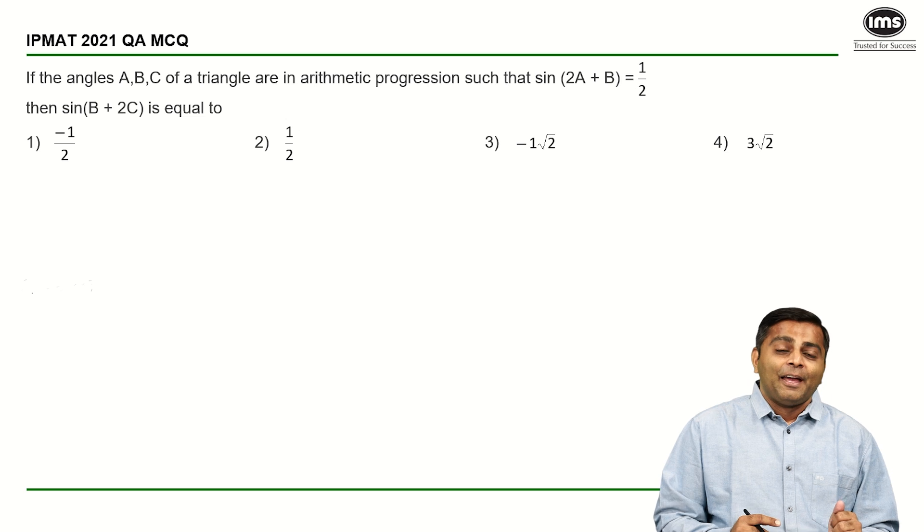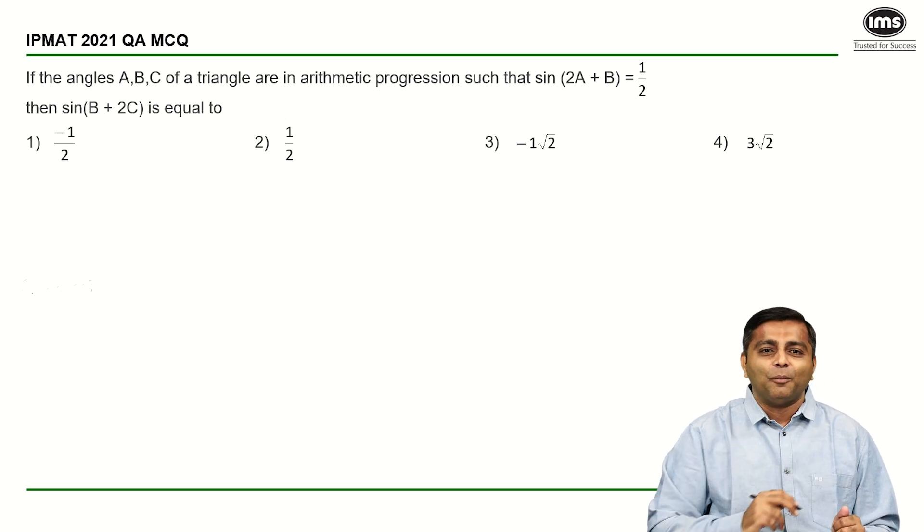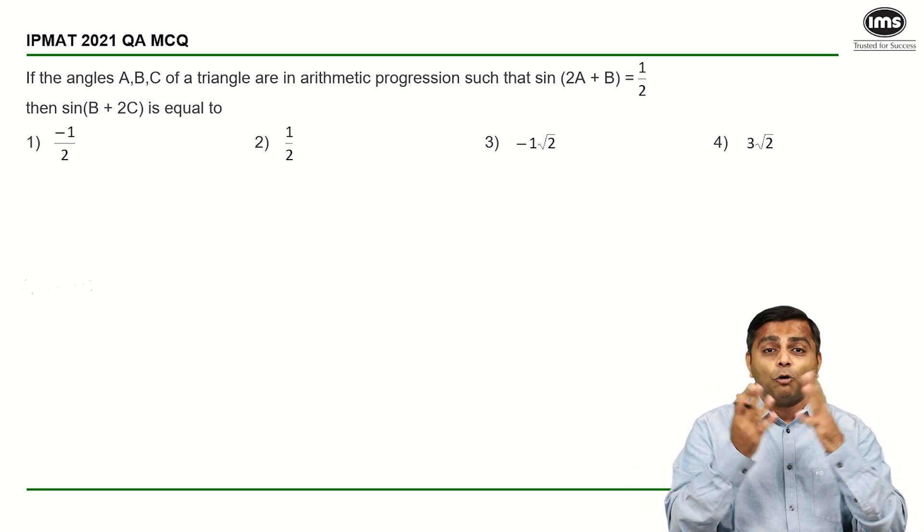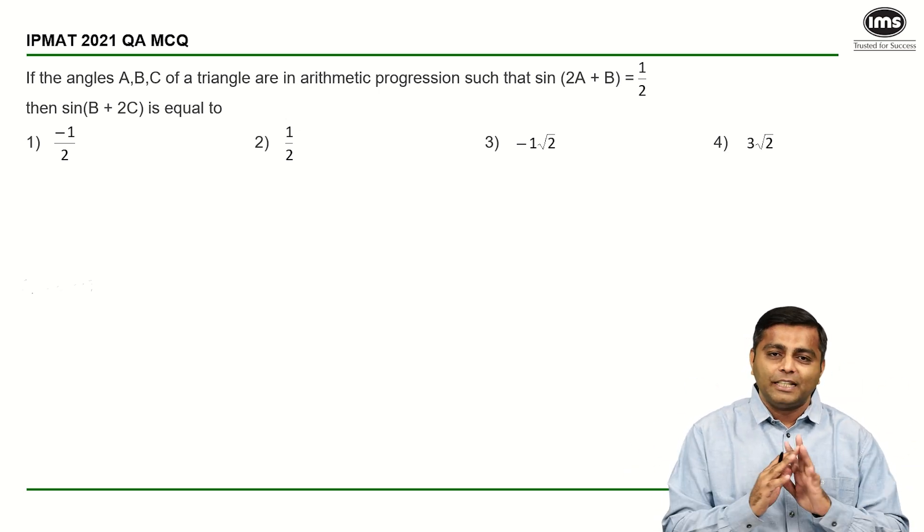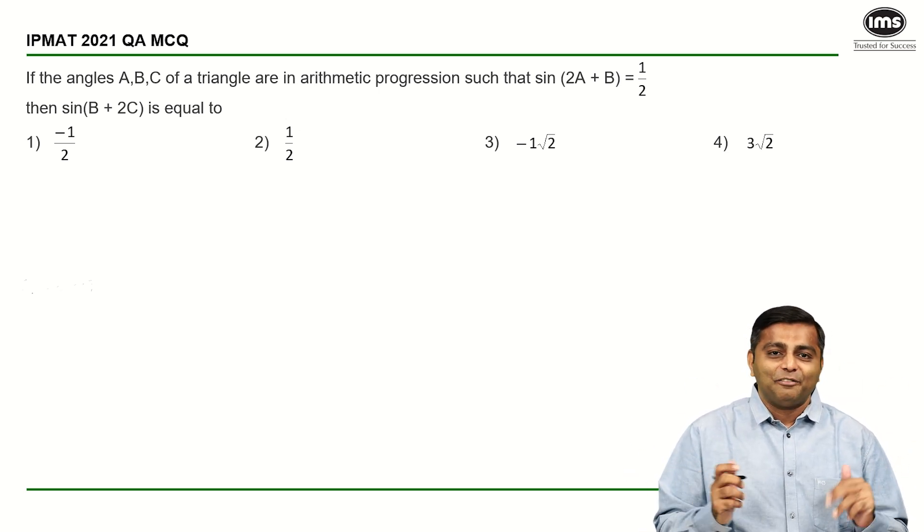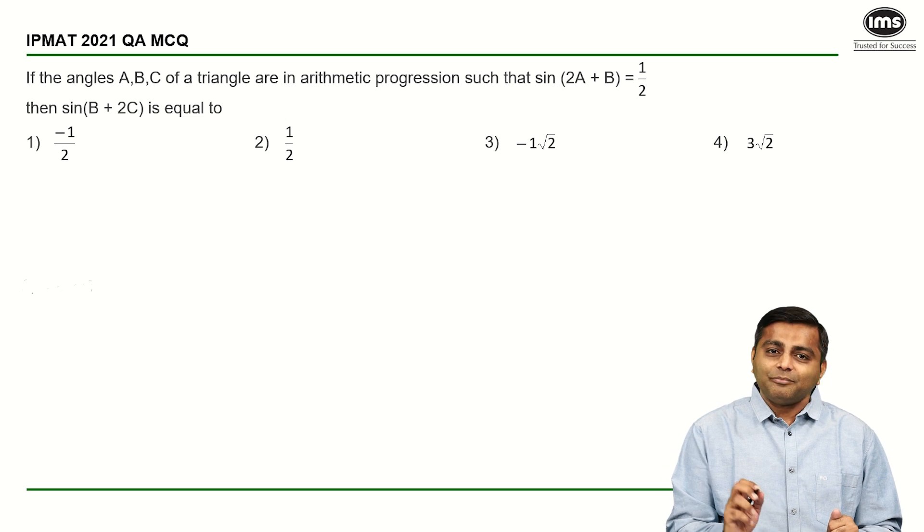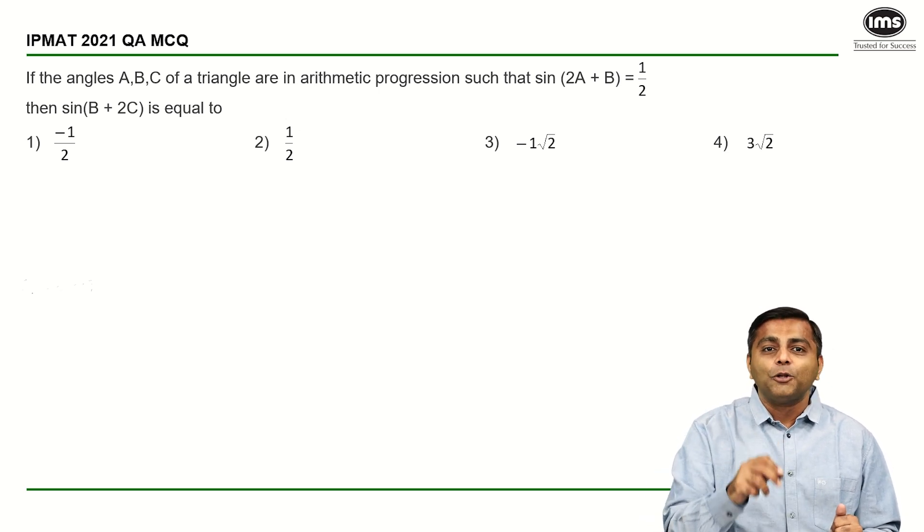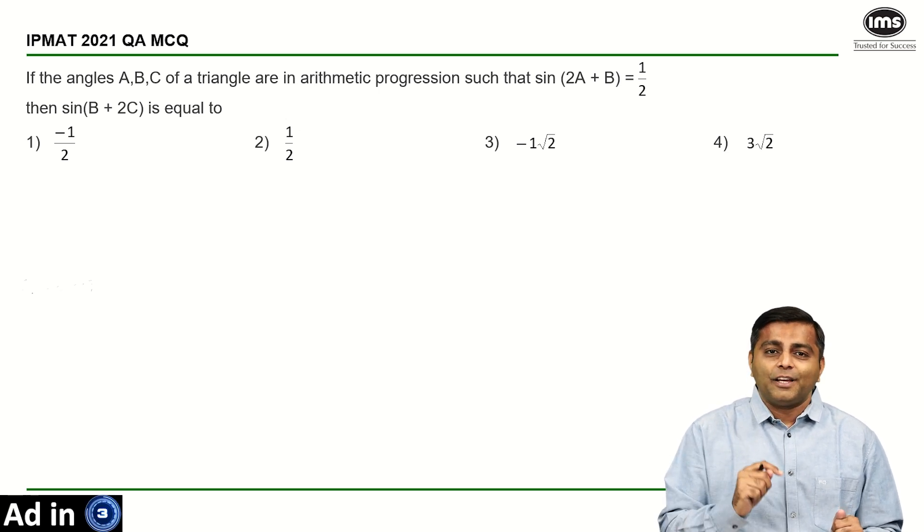We can wiggle our way out in trigonometry if you know the basic values of sine and cos and the four quadrants of all silver tea cups. That's about all you need for this question. Before we actually start solving, I would want you to give an honest attempt to this question without the blockage that it's a trig question, and then we will see the solution.